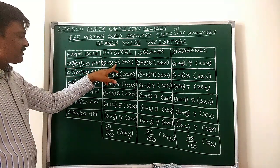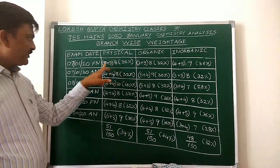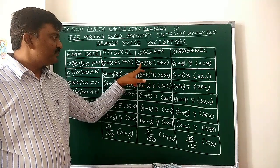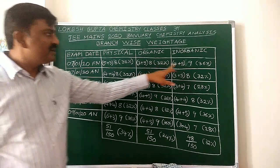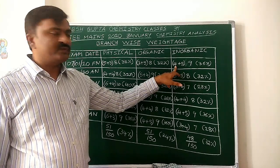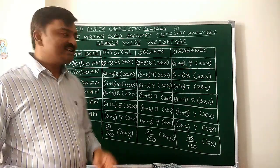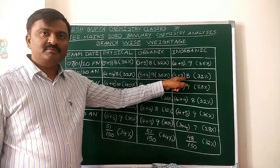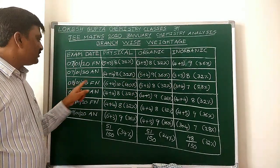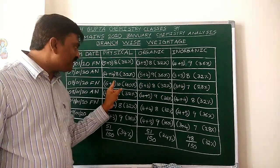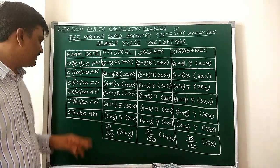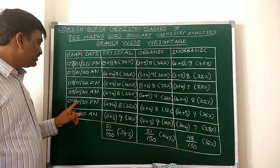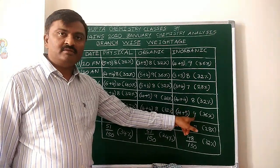7th January morning: Physical Chemistry 8, Inorganic 8, Organic 9 questions out of 25 — equal weightage for 3 branches. 7th afternoon: 8, 9, 8 — equal weightage. 8th morning: Physical Chemistry had 1 question extra compared to Inorganic. 8th afternoon: 8, 9, 8 — equal weightage for 3 branches. 9th January morning: 8, 8, 9 — equal weightage.